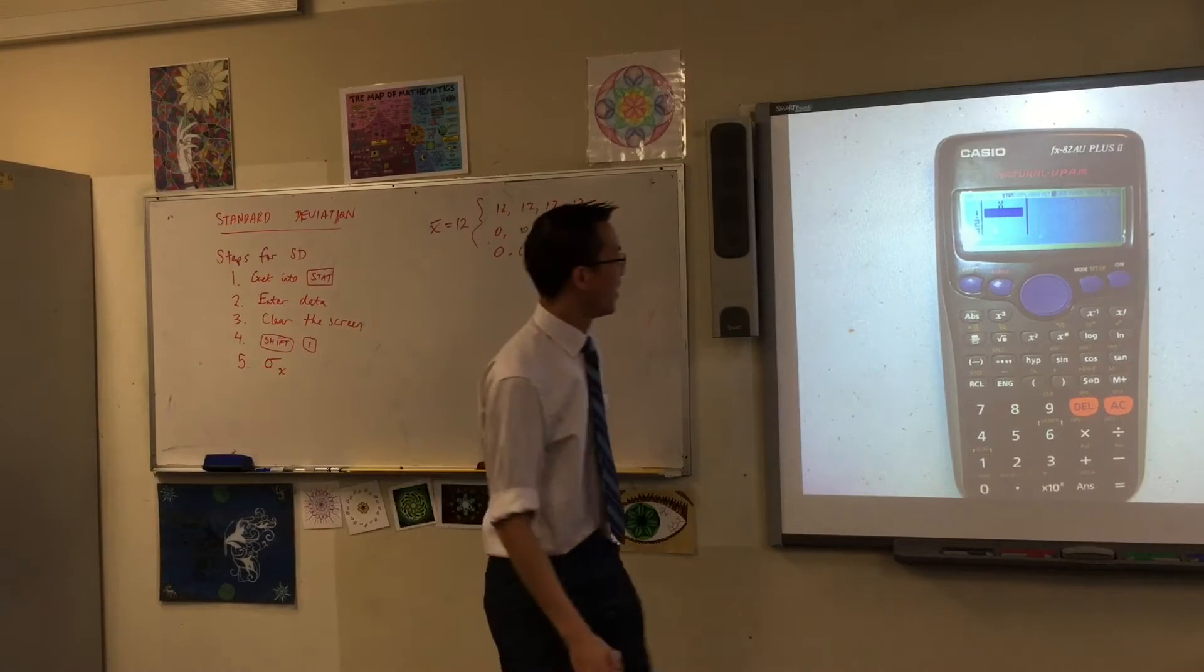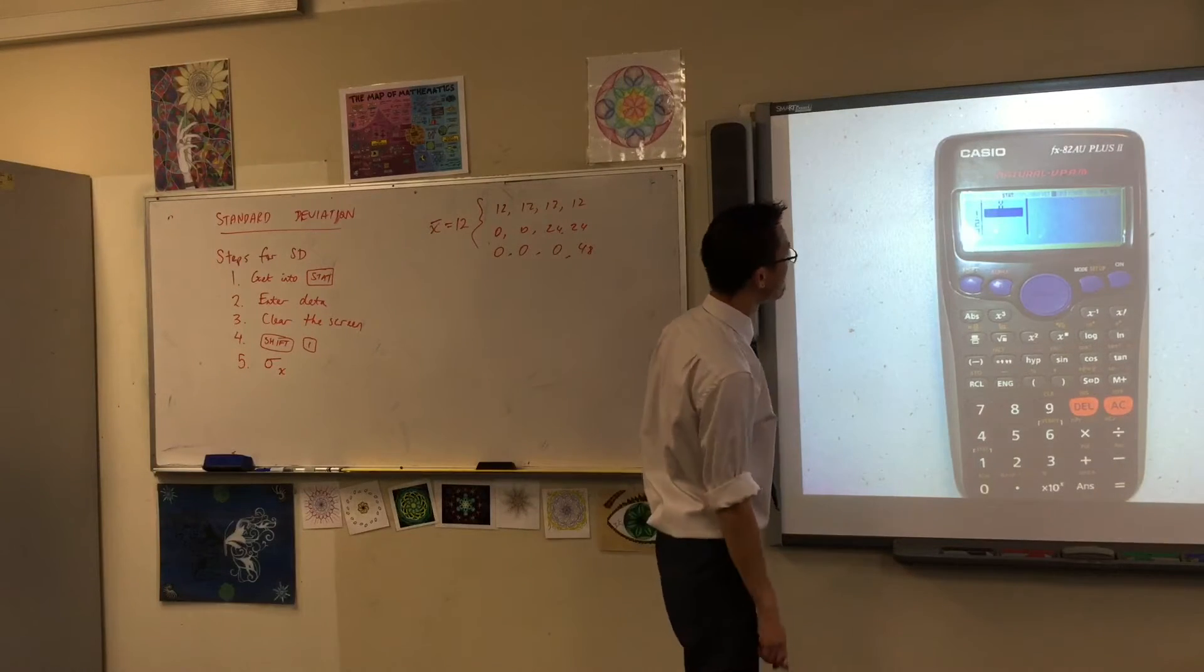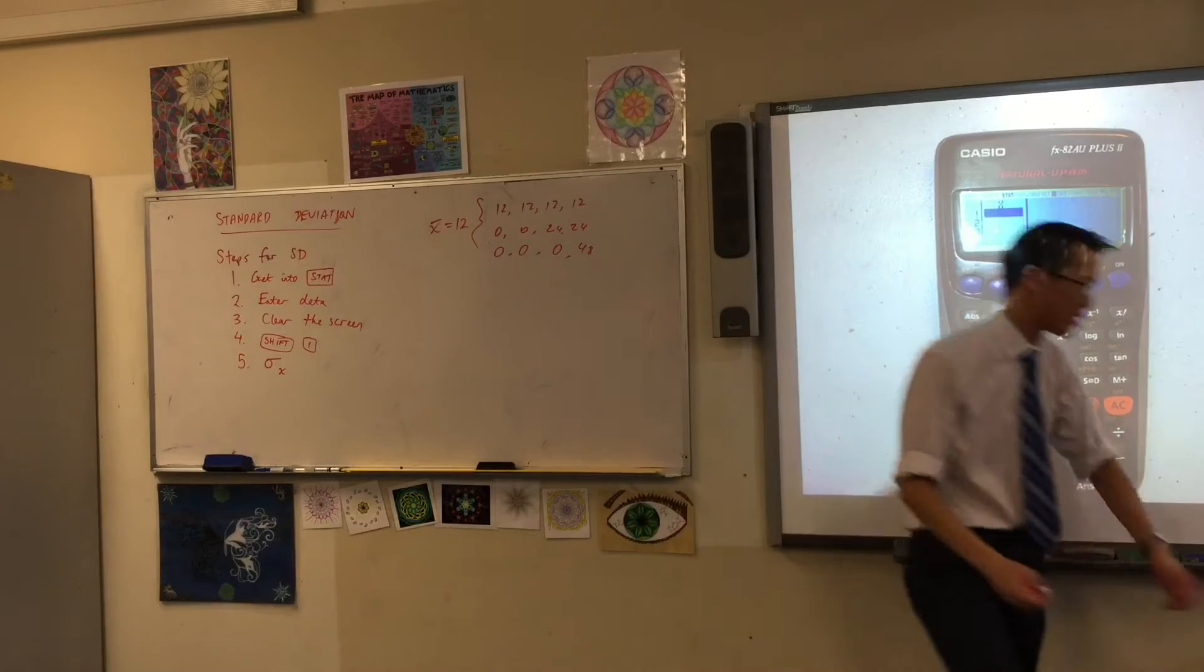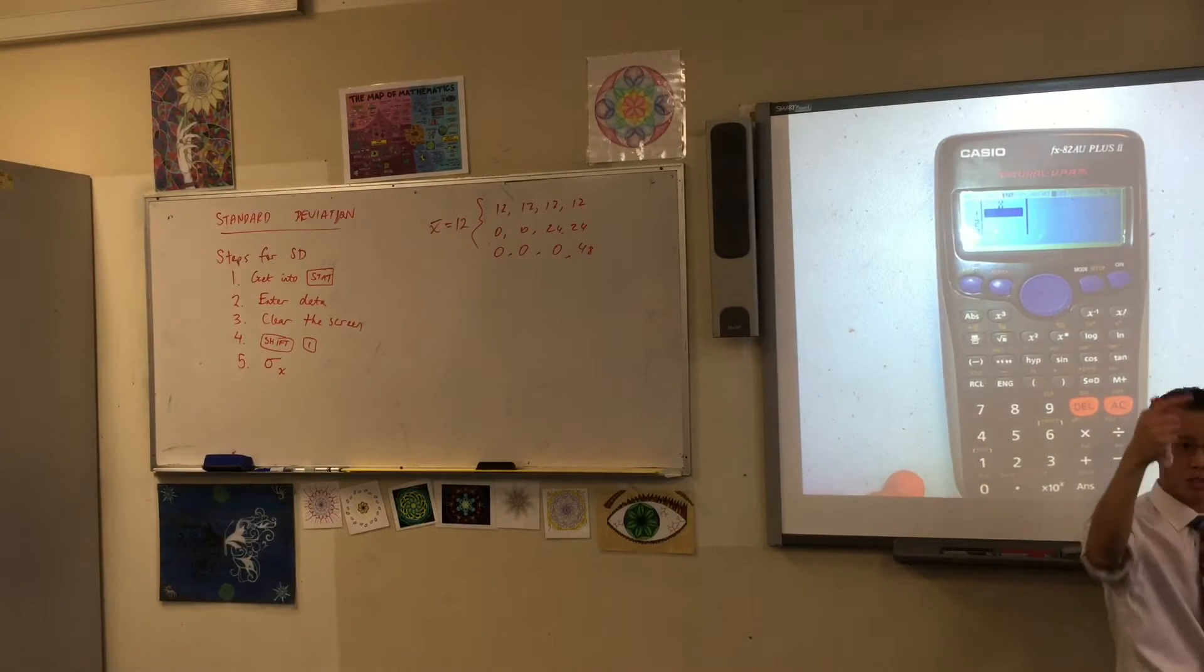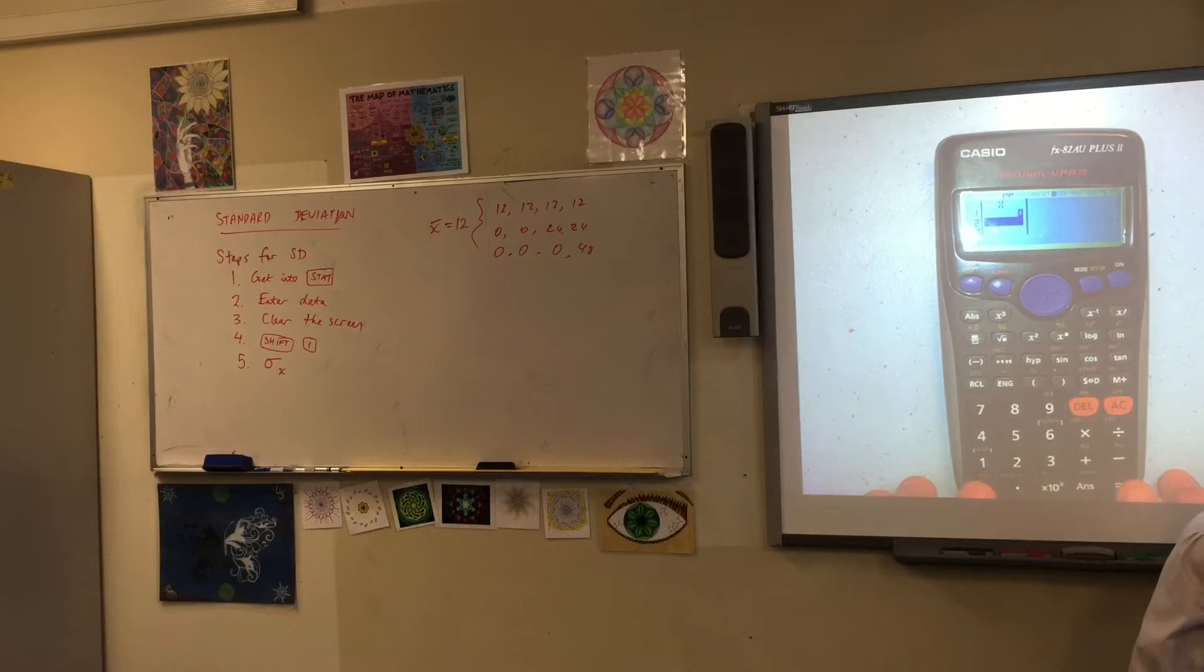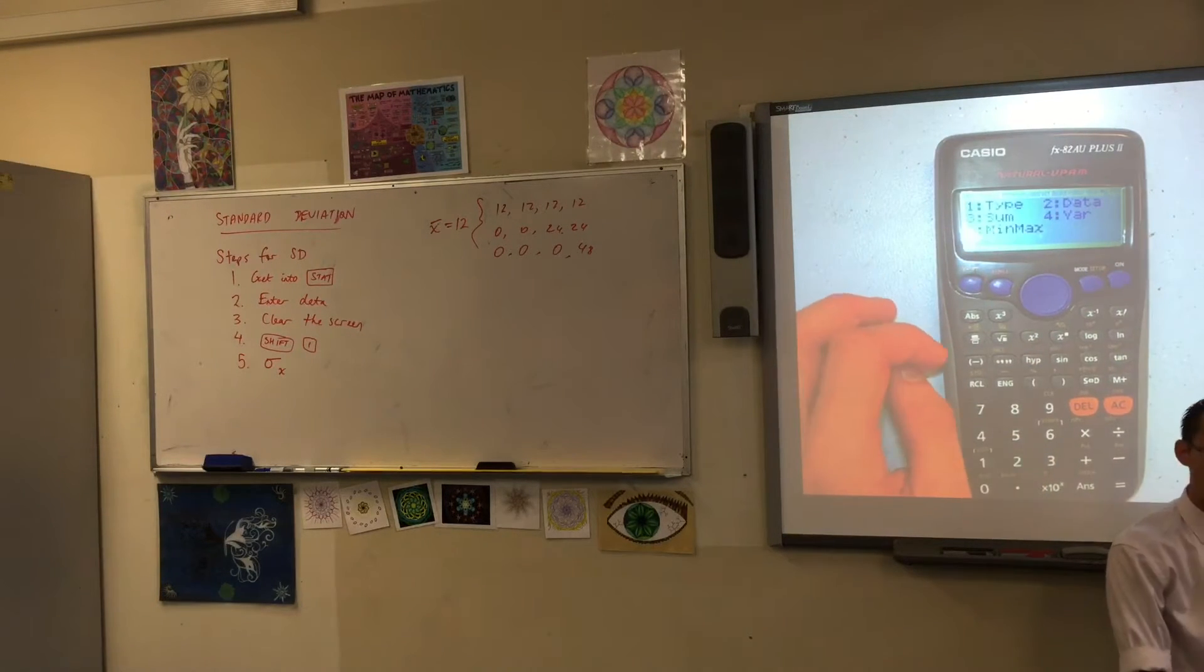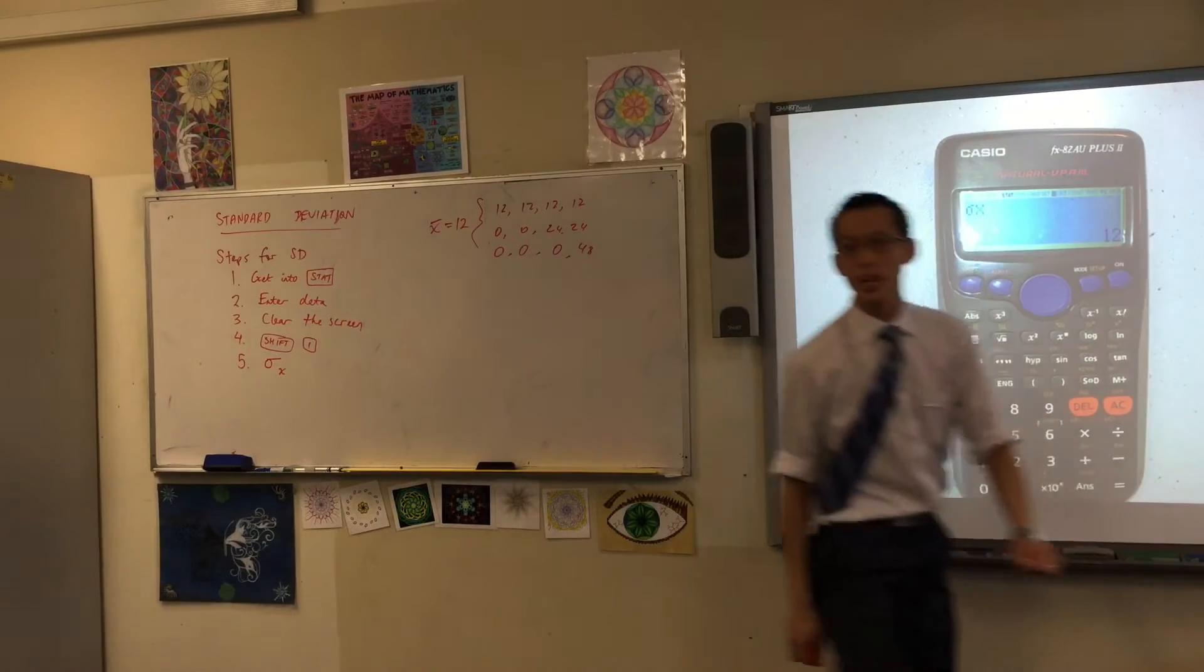Okay, so now I'm gonna punch in this next set of scores. You remember you press equals to go from one score to the next. So 0, 0, 24, 24, get out of there. Shift 1 to look at all my different options. I'm gonna go 4 for variable, and I'm gonna punch 3 for standard deviation.